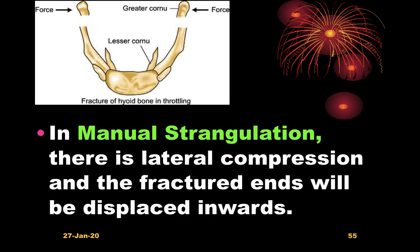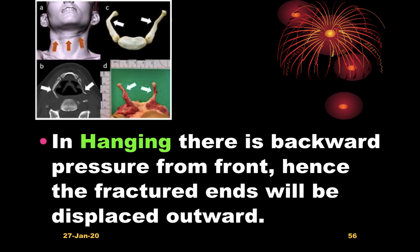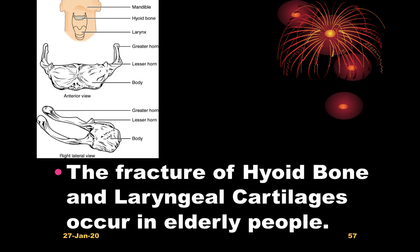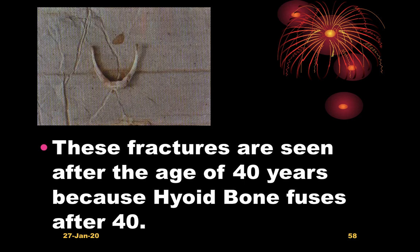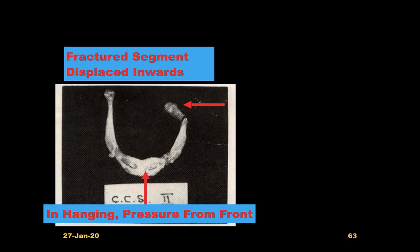In manual strangulation there is lateral compression and the fracture ends are displaced inward. In hanging there is backward pressure from the front, hence the fractured ends are displaced outward. Fracture of the hyoid bone and laryngeal cartilages occurs only in elderly people because before the age of 40 the bone is cartilaginous; fracture only occurs after age 40 when the bone is ossified.